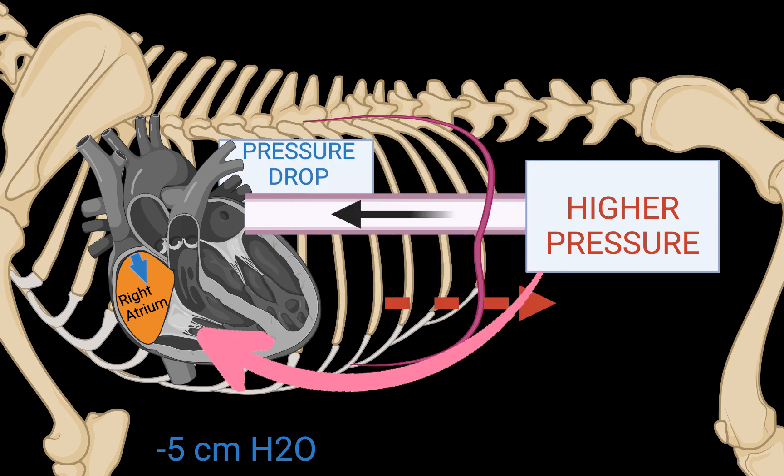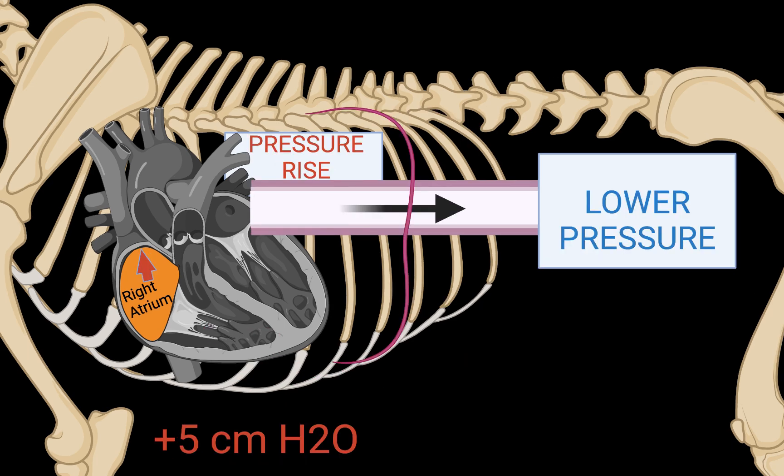In order for the CVC to collapse, intra-abdominal pressure should exceed right atrial pressure during inspiration. Patients on positive pressure ventilation will have reverse physiology, since a positive pressure breath causes elevation of intrathoracic pressure on inspiration and CVC distension instead of collapse.